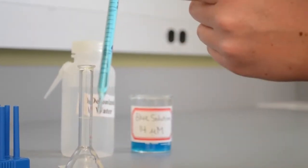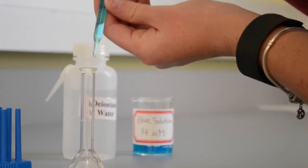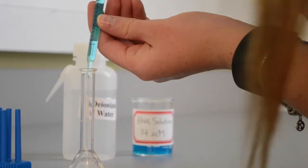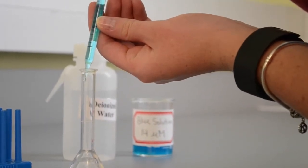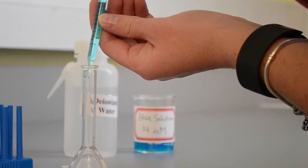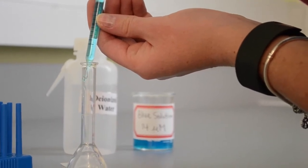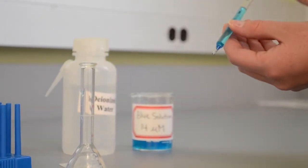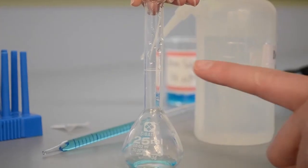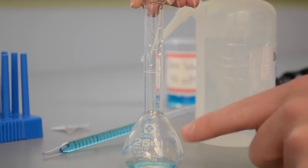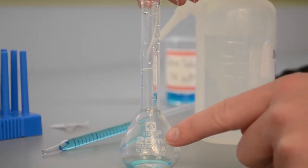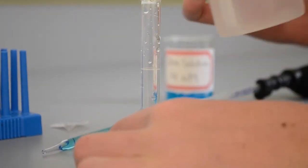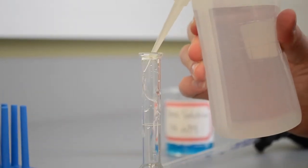One milliliter of the blue solution is added to the volumetric flask. The line on the volumetric flask represents 25 ml. Water is added in order to make the dilution.